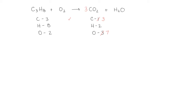So let's move on to the hydrogen. We have 8 on the left and 2 on the right, so I'm going to try a 4, which gives me now 8 hydrogen. But once again we've changed the number of oxygen. So we have 3 times 2 — 6 coming from the carbon dioxide — plus 4 from the water, which is 10. And we can see hydrogen is now balanced.